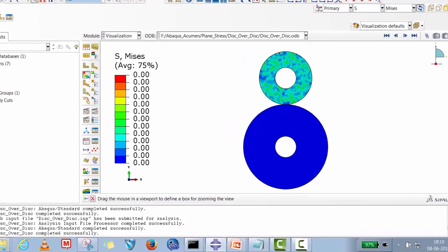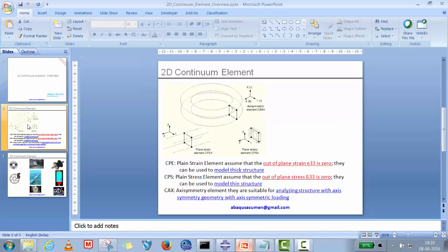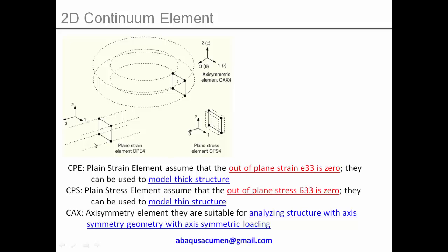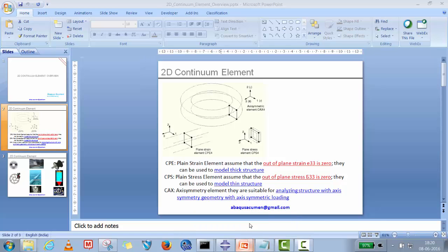Before starting this problem, I strongly recommend you go to the 2D continuum element overview session. Briefly, in that session we explained plane strain, plane stress, and axisymmetry elements. Plane stress is a thin structure where stress in the third direction is zero. Plane strain is a very thick structure where strain is constant or zero in the third plane. Axisymmetry is a 360-degree rotation structure.